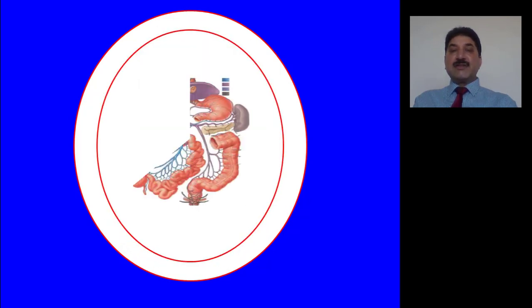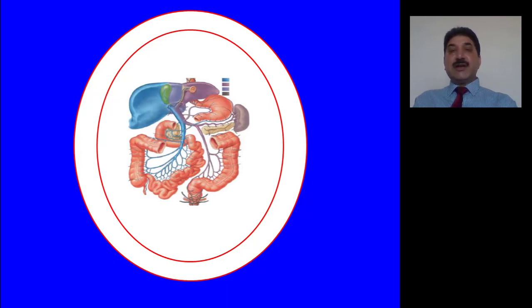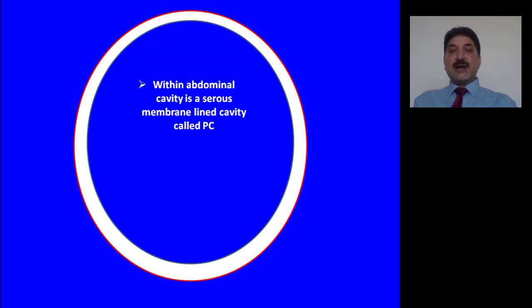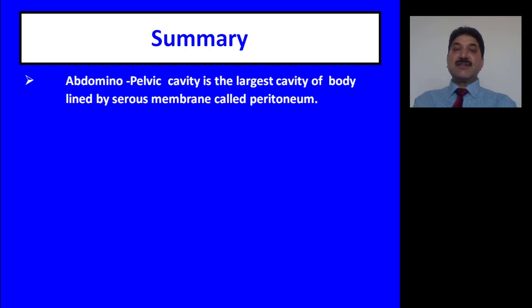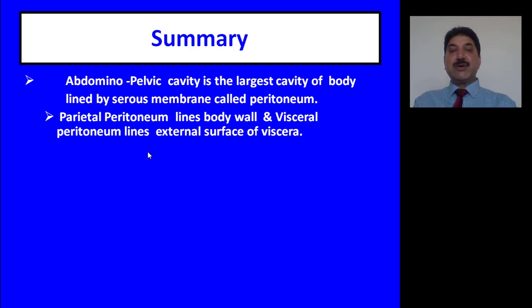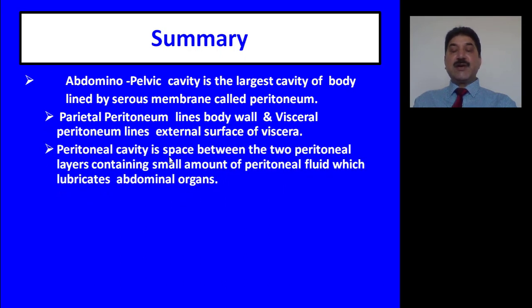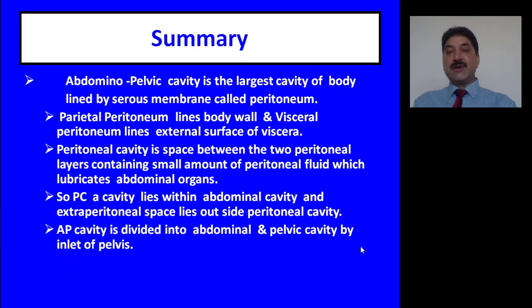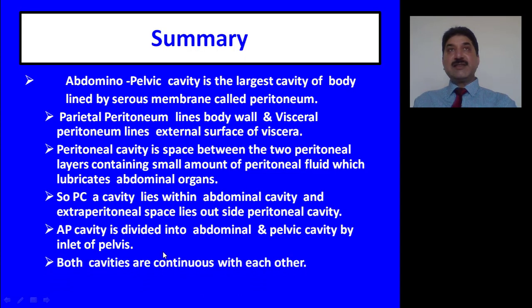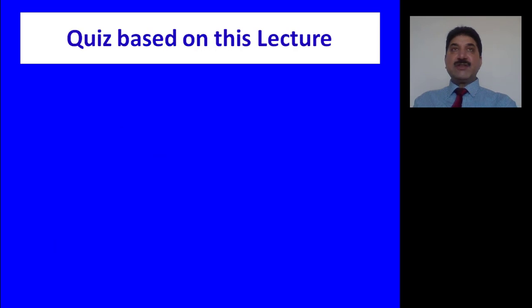The peritoneal cavity lines the abdominal wall. Structures within the peritoneal cavity are called intraperitoneal; it does not include retroperitoneal structures. Within the abdominal cavity is a serous membrane-lined cavity called the peritoneal cavity, which is smaller than the abdominal cavity. Abdominal pelvic cavity includes peritoneal cavity and extra-peritoneal space. To summarize: the abdominal pelvic cavity is the largest cavity of the body, lined by a serous membrane called peritoneum. Parietal peritoneum lines the body wall and visceral peritoneum lines the extra-peritoneal surface of viscera. Peritoneal fluid lubricates abdominal organs. The abdominal pelvic cavity is divided into abdominal and pelvic cavities by the inlet of the pelvis; above the inlet lies the abdominal cavity and below lies the pelvic cavity. Both cavities are continuous with each other.